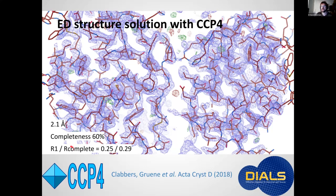So for that reason of low completeness, we reported R1 and R-complete rather than R-work and R-free. And you can see you get rather high values of R-complete. And this is quite typical though for electron diffraction. It's much higher than you'd expect for x-ray diffraction. And I've got a bit more on that later.